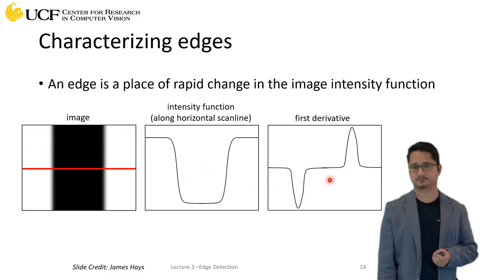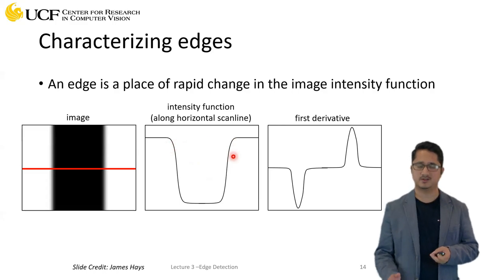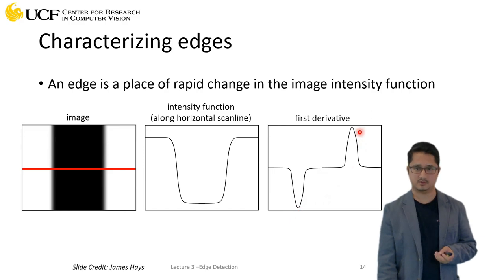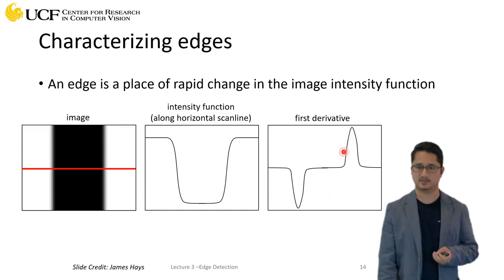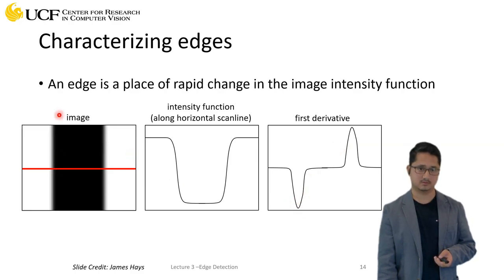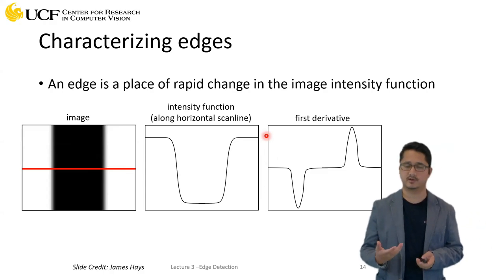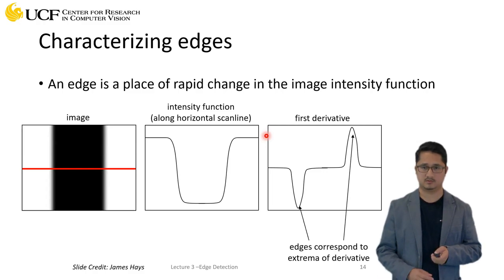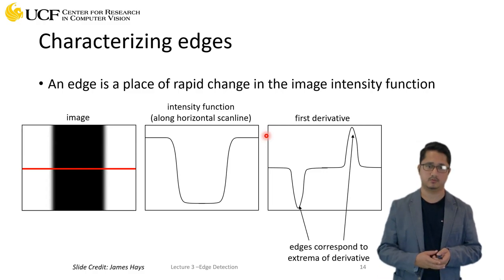By looking at the first-order derivative, we can easily automate edge detection — whenever there is a dip or a peak (a hill), that's an edge. This edge corresponds to one vertical edge in the image, and that edge corresponds to the other. So first-order derivative actually helps you compute edges in images.